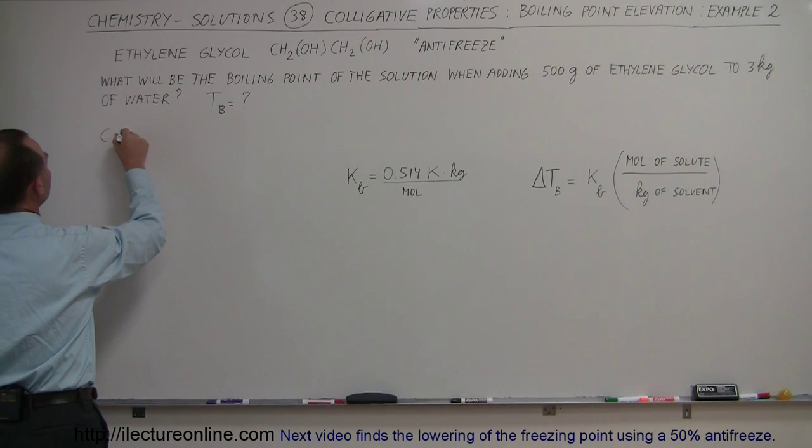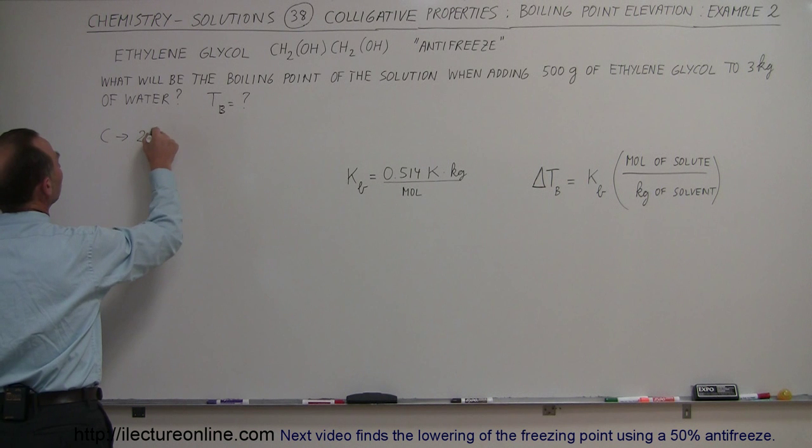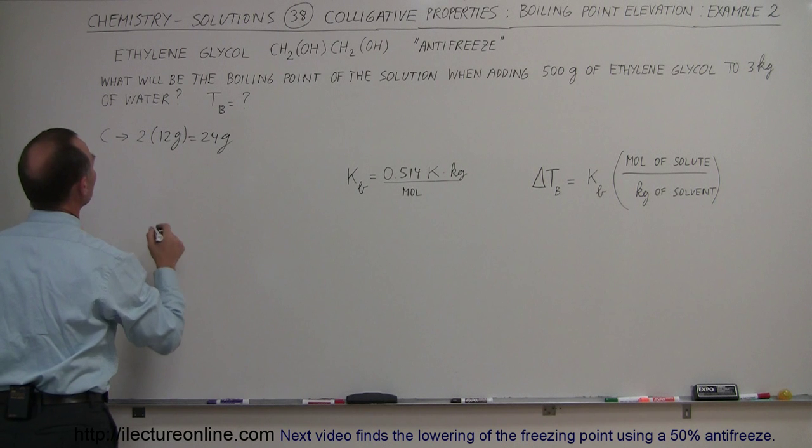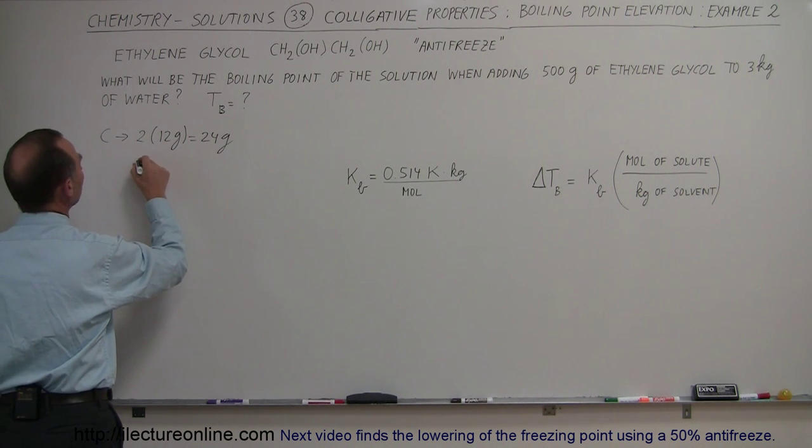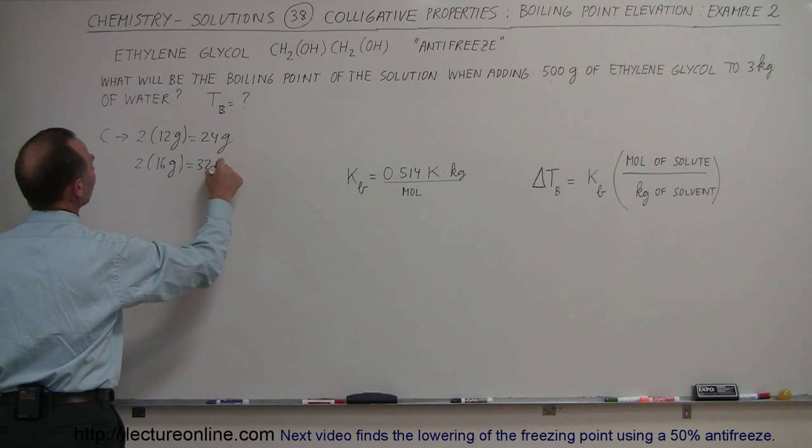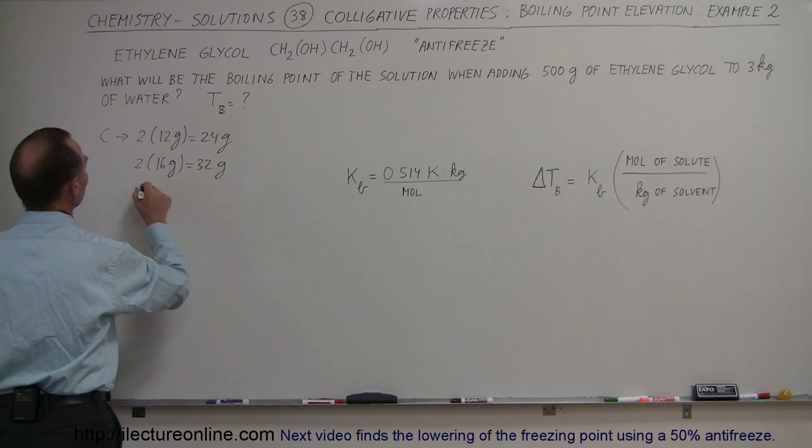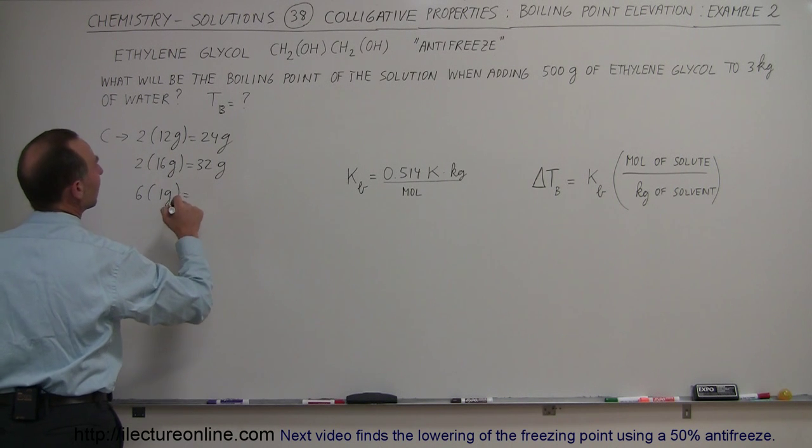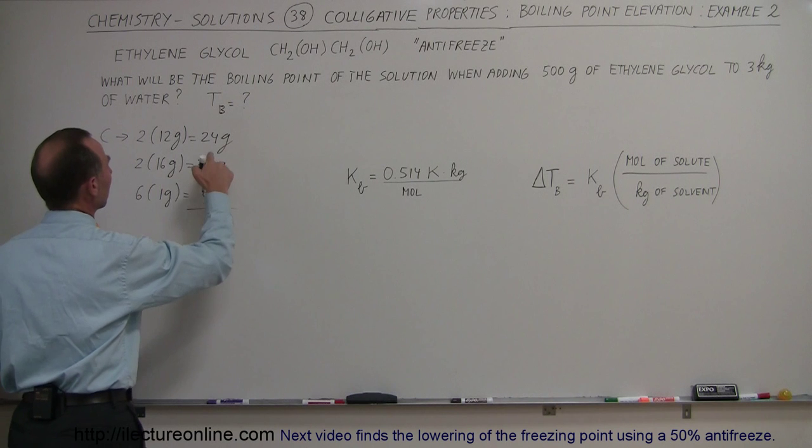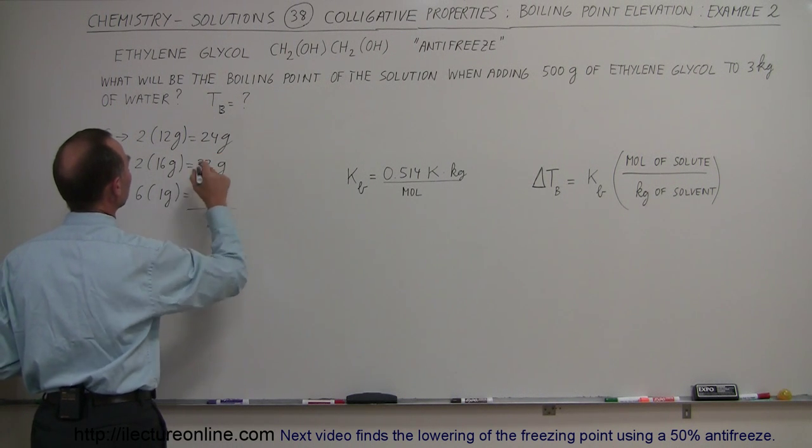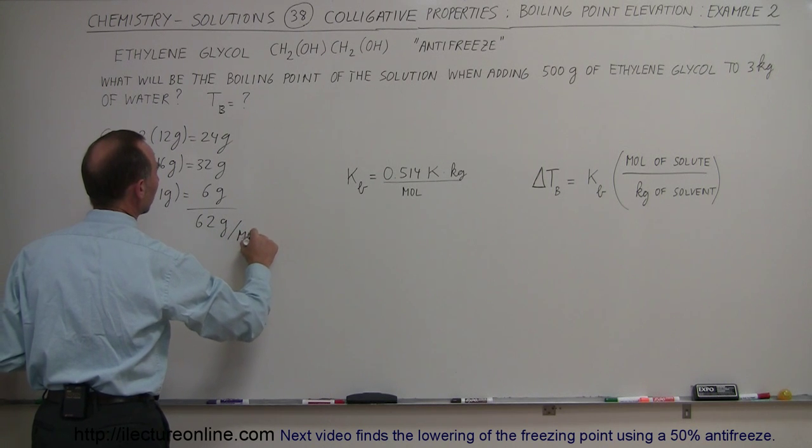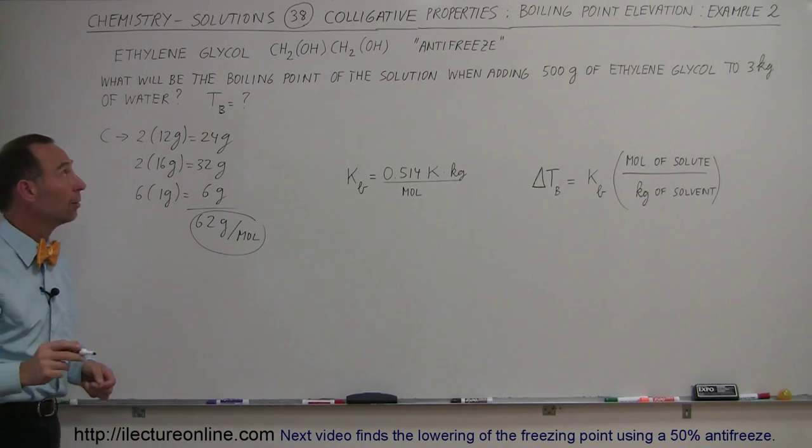So let's figure out what the molar mass would then be. For carbon, it would be two times 12 grams, so 24 grams for the two carbon atoms. We have two times 16 grams, that would be 32 grams for the oxygen atoms, and there's six hydrogen atoms, so it would be six grams altogether. That's 62 grams per mole, the molar mass of ethylene glycol.